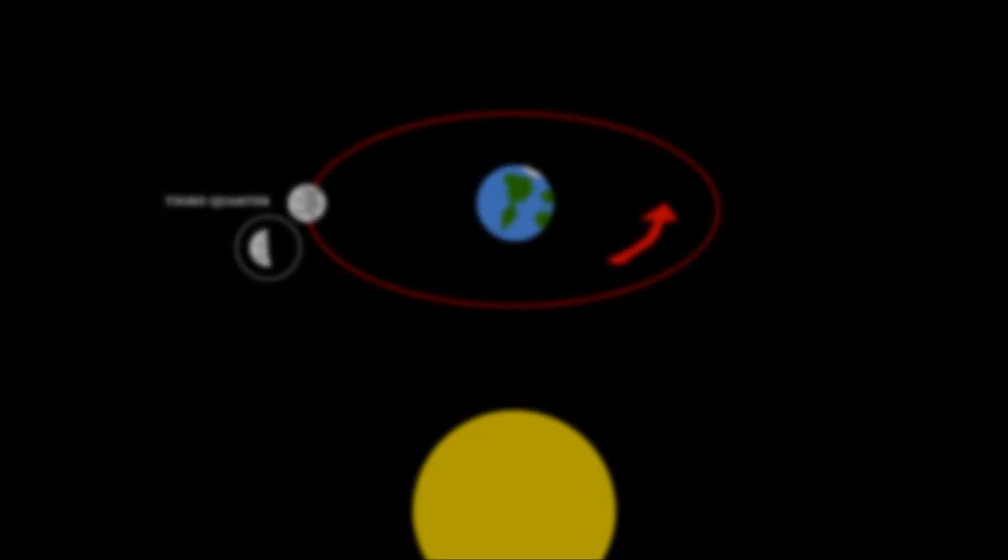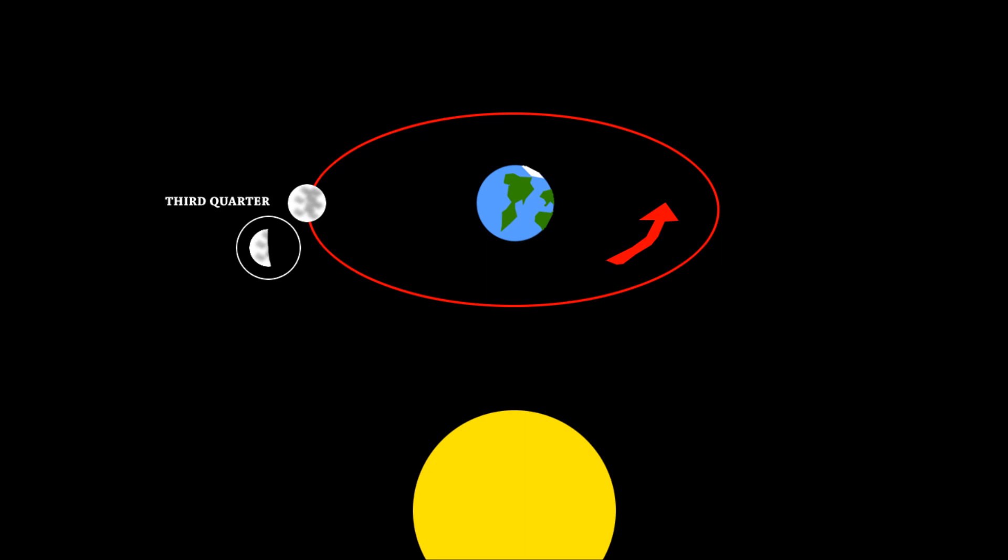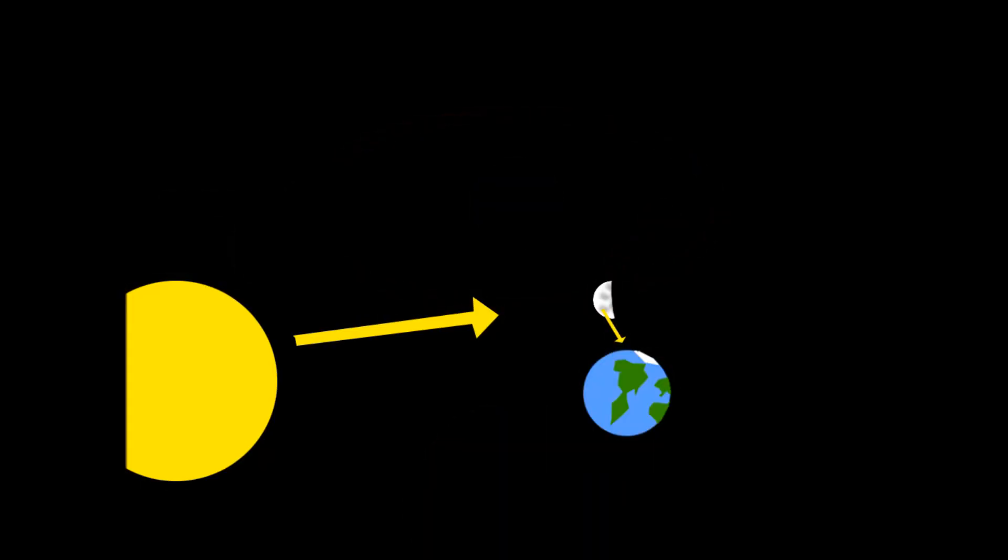Next we will look at the third quarter phase. The third quarter phase is exactly like the first quarter phase, except it's a mirror image. So in the third quarter phase, you will see the left side of the moon instead of the right side of the moon.